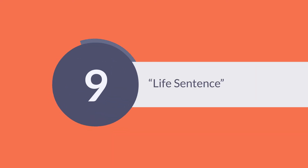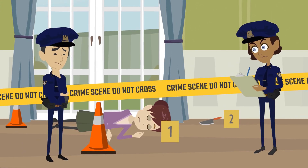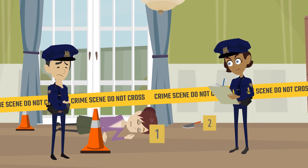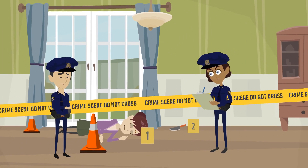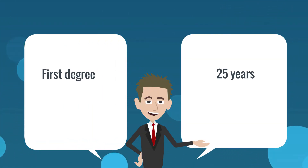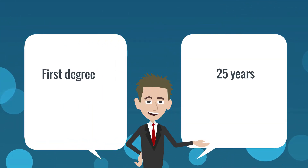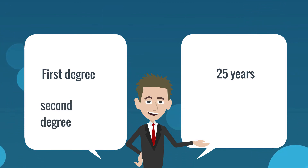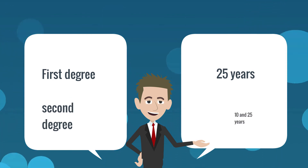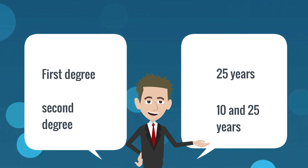The ninth type of punishment is a life sentence. If you are convicted of first or second degree murder, a life sentence will be imposed. First degree offenders must serve at least 25 years before being eligible for parole. Those convicted of second degree murder must serve somewhere between 10 and 25 years at the discretion of the judge.